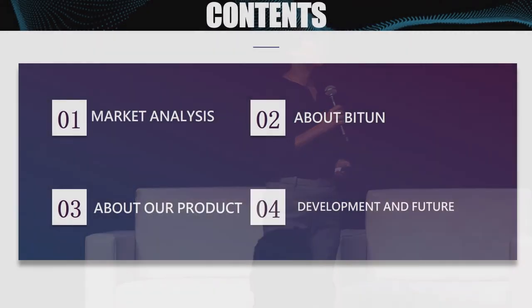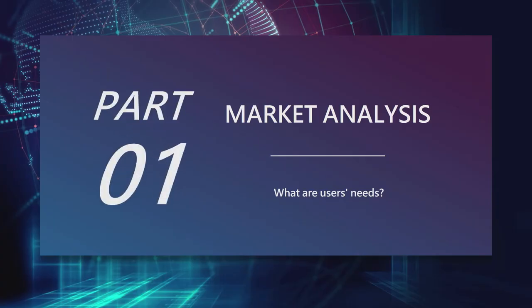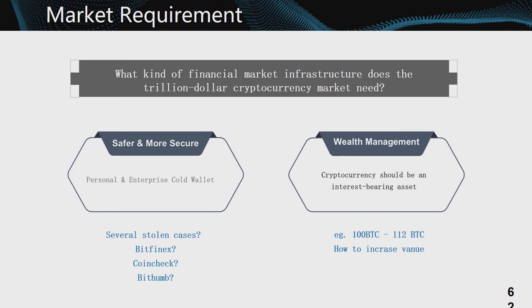I'm Hope Wang from B2N FinTech. We are a blockchain bank. Today it's my honor to share our products. In my presentation there are four parts: market, our company, our products, and our future. As a product manager, I always ask myself what users really need and what kind of financial market infrastructure does the trillion-dollar cryptocurrency market need. We have two main points: the first and most important thing for a bank is to protect the user's assets — there were several theft cases involving exchanges like Bitfinex and others.